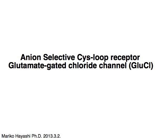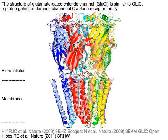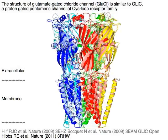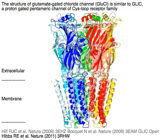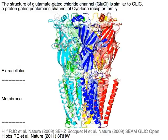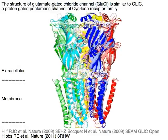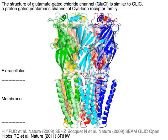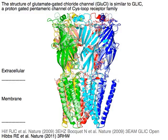Anion Selective Cys-loop Receptor: Glutamate-Gated Chloride Channel, or GLU-CL. The structure of GLU-CL is similar to GLIC, a proton-gated pentameric channel of the Cys-loop receptor family.